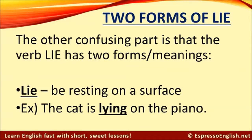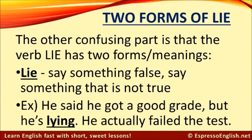The other confusing part is that the verb lie has two forms and two meanings. We have lie meaning to be resting on a surface, like the cat is lying on the piano. And we have lie meaning to say something false — say something that is not true. For example, he said he got a good grade, but he's lying. He actually failed the test.